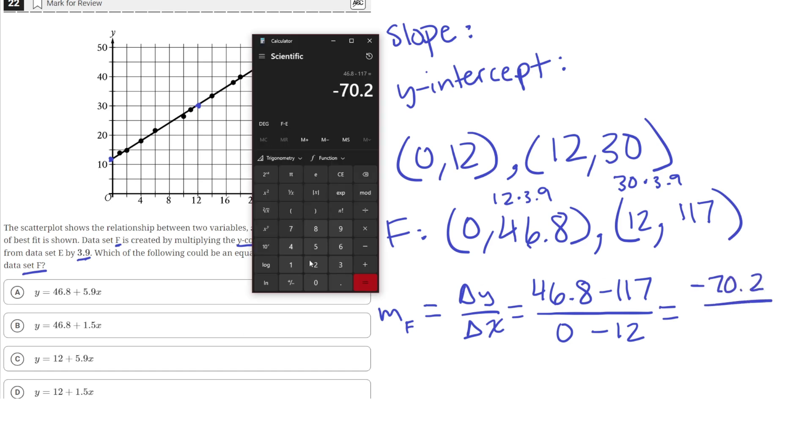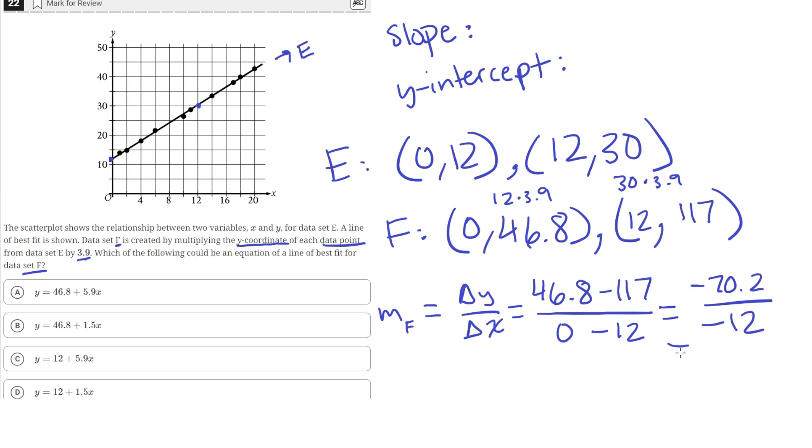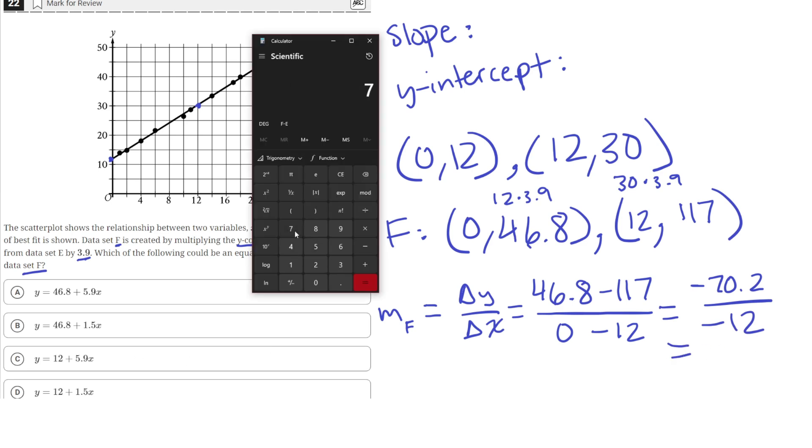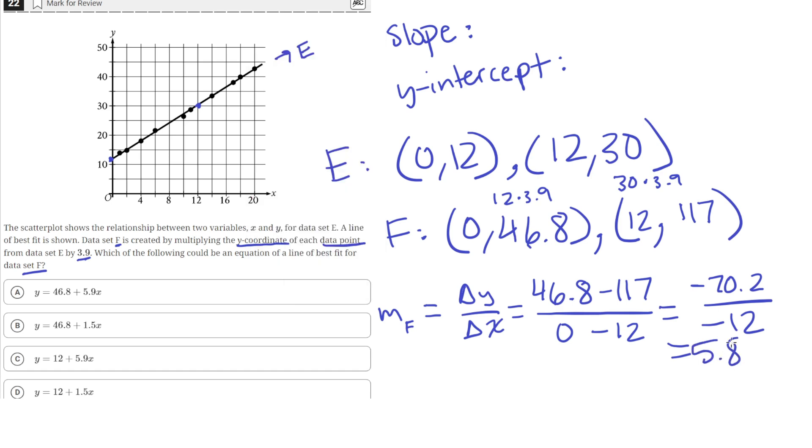And the change in X, 0 minus 12 is equal to negative 12. And that is just equal to 70.2 divided by 12. That's just equal to 5.85. The negatives cancel out. So, the slope of our line is 5.85.